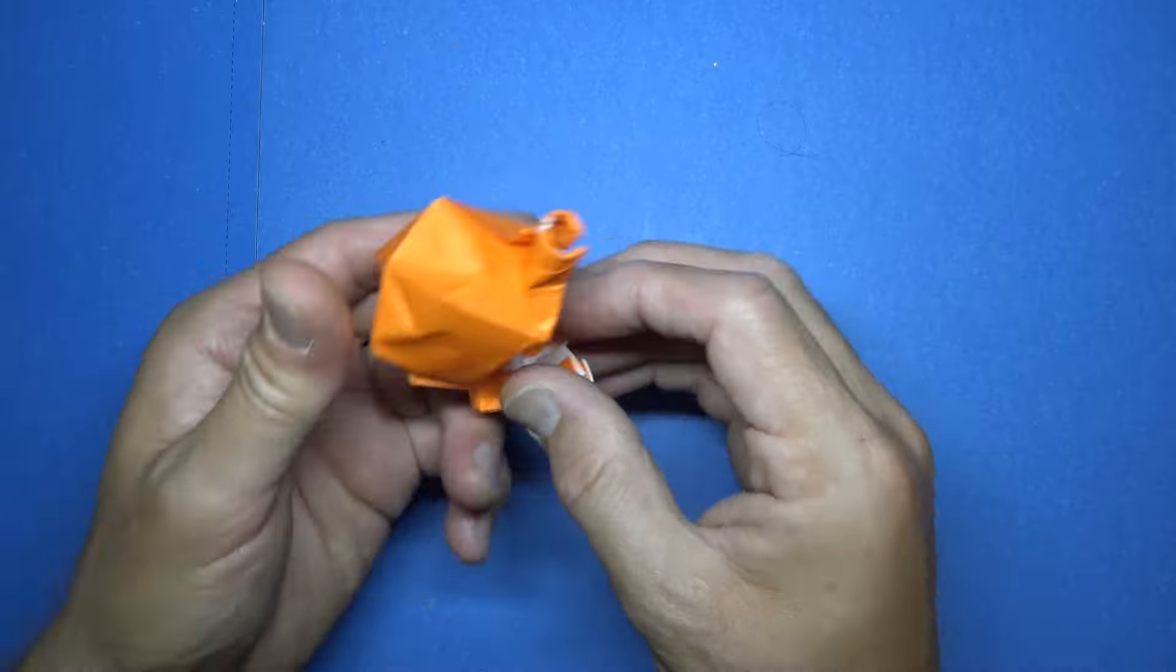So for this model, I'm going to use a 6-inch square of kami. That way, the legs will look separate. If you use printer paper, it'll just look like one giant leg. Alright, so begin white side up, and fold in half. Try to make really precise folds, and crease sharply.